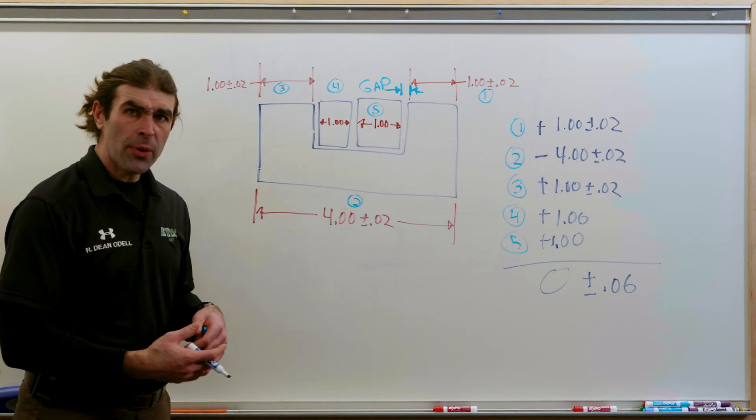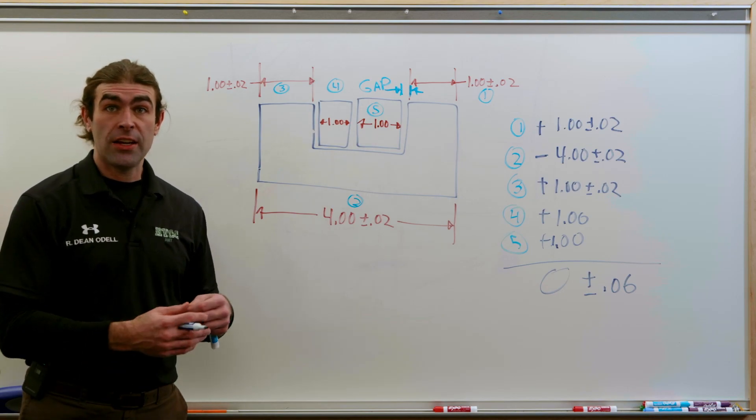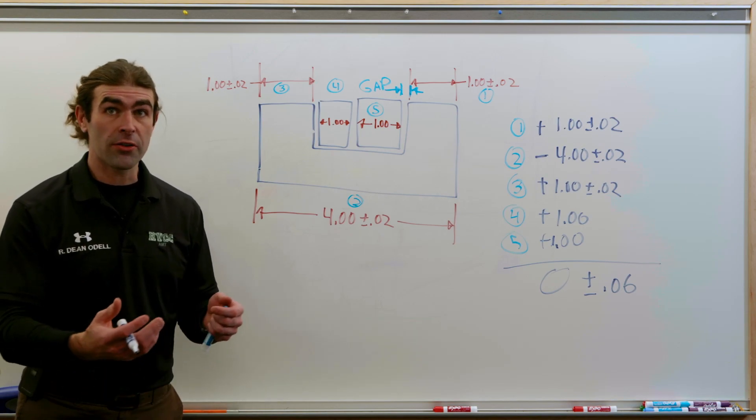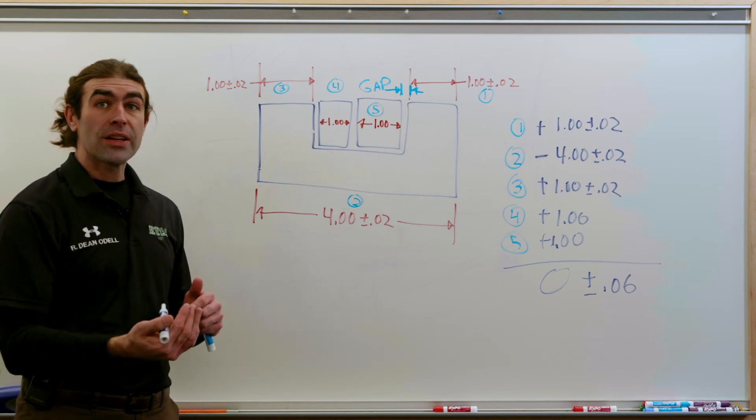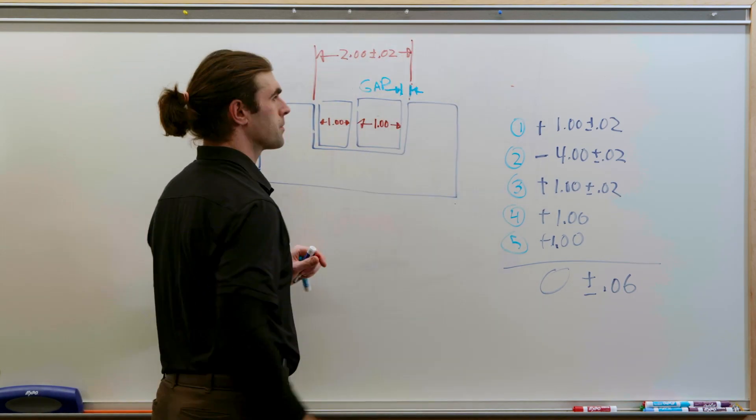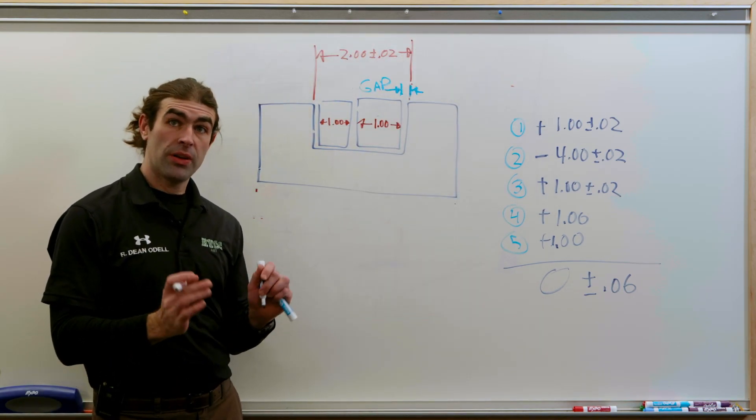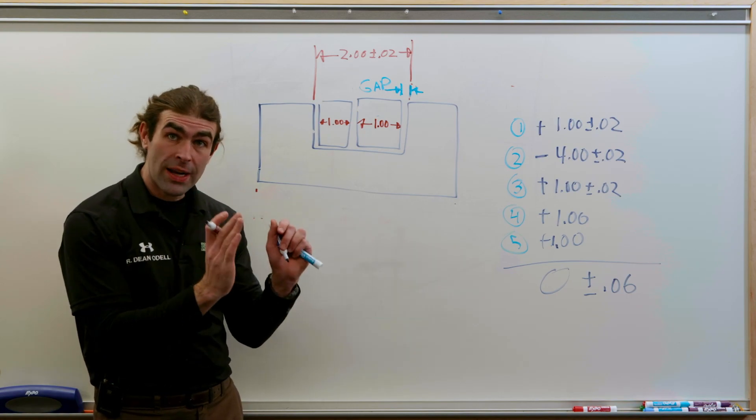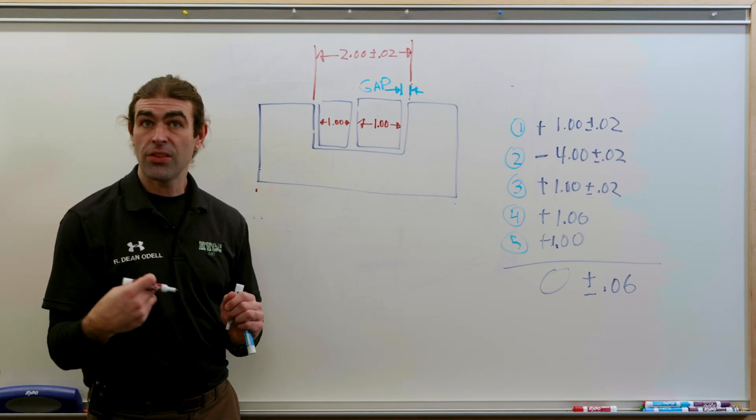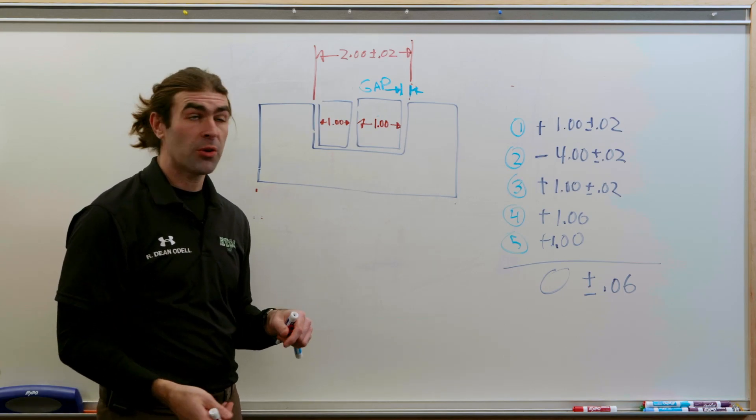So a couple of ways to go about this. We could change the nominals on the dimensions to achieve clearance at worst case, or we can change the dimensioning scheme. So, if we dimension the U-shape directly where the blocks are going to fit, we're going to end up with less tolerance accumulation. Let me show you why.